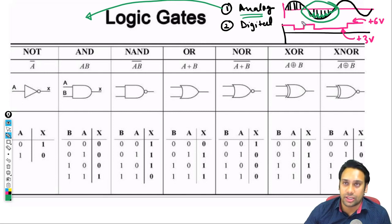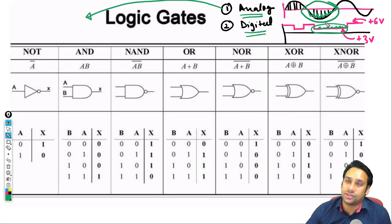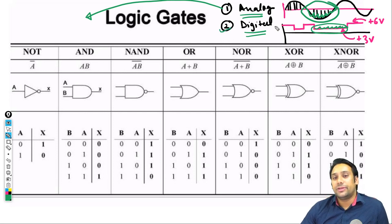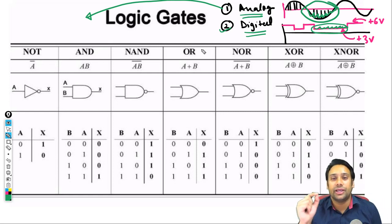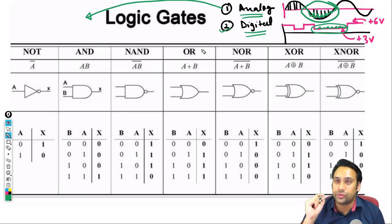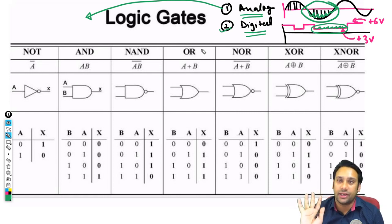If there is electromagnetic distortion in an analog signal, you will not be able to recover those values perfectly. But in case of a digital signal, even if there is some distortion, we will still be able to recover from it — digital signal को read करना बहुत ज्यादा possible है. So digital signals are not very sensitive to noise — but in case of analog signal, if there is noise, हम उसको use नहीं कर सकते.